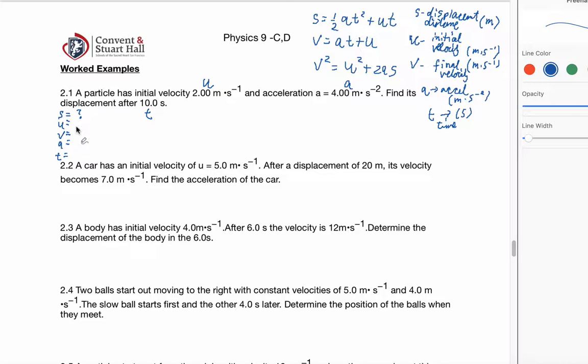So S is unknown. U is 2. V is unknown, it's not given. A is 4. And T is 10. So I want the displacement after 10 seconds. And let's just remember that S is the displacement, that's the unknown. So all I'm doing is I'm labeling the letters. I have them here.